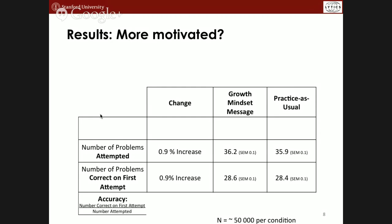Looking at how many problems they got correct on the first attempt — not just trying more problems, but actually getting them correct — you see the same 1% increase. And if you look at accuracy rates, the growth mindset message actually had an overall benefit. So these small message changes are increasing people's success over a pretty long period of time.